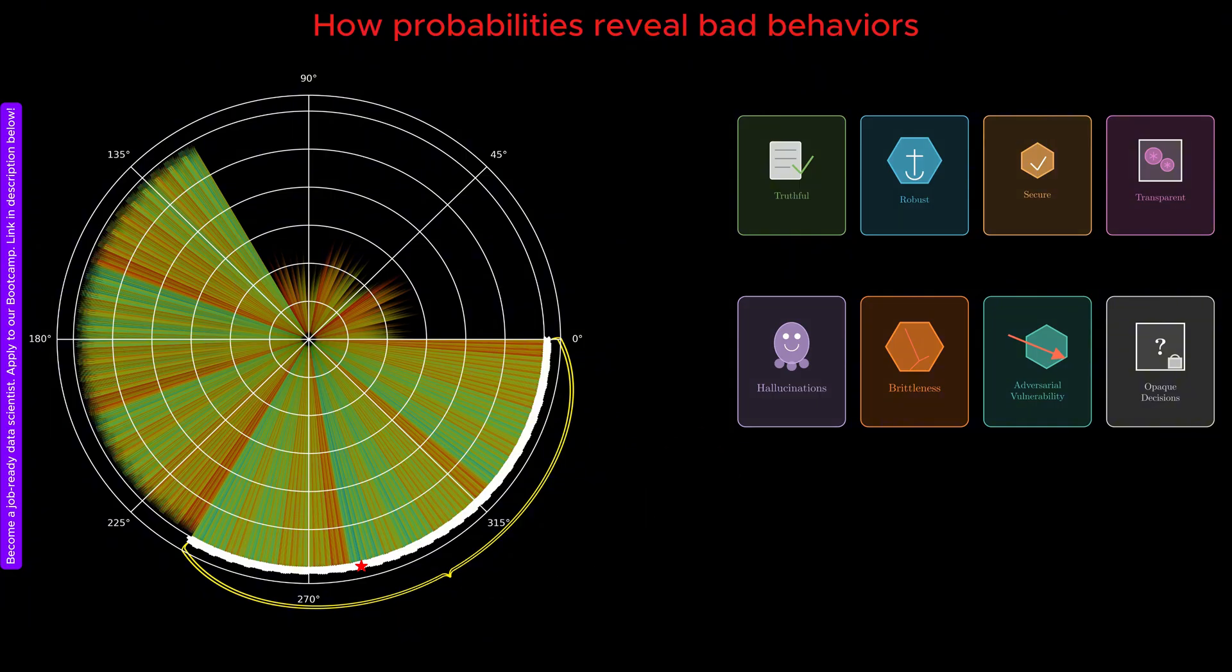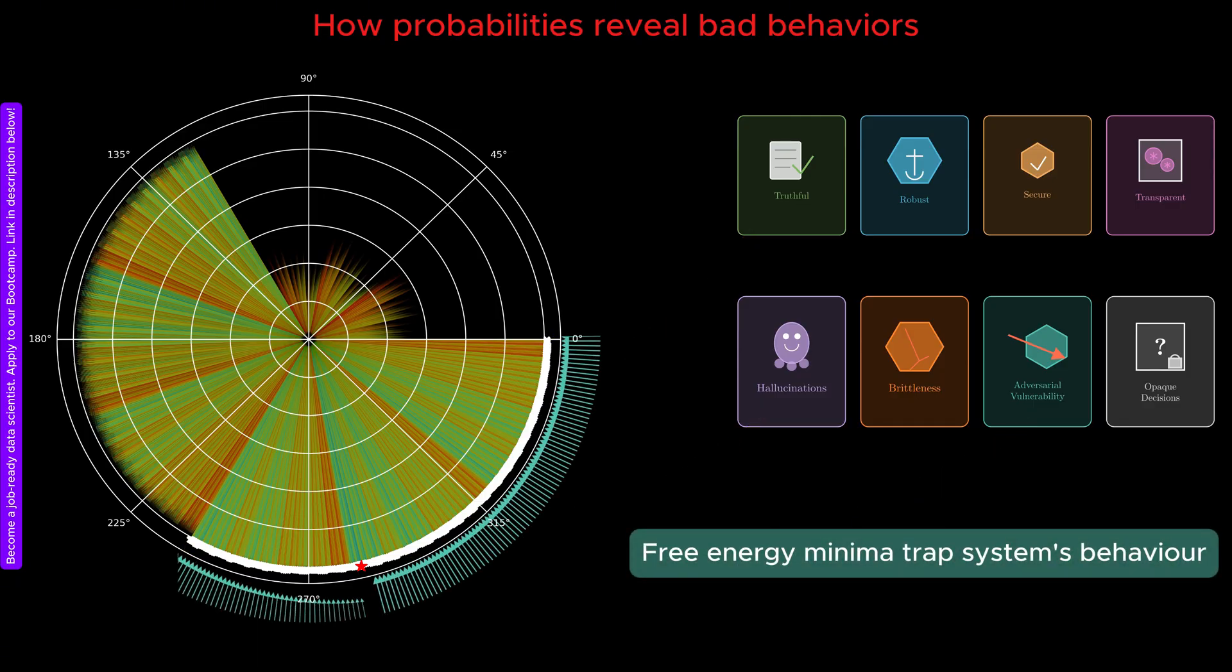We can associate both good and bad behaviors of an AI model with these minima. A coherent, correct answer corresponds to one minimum. A hallucinated but fluent response corresponds to another. A jailbreak or adversarial response corresponds to yet another minimum. The problem is not that these bad behaviors exist at all.